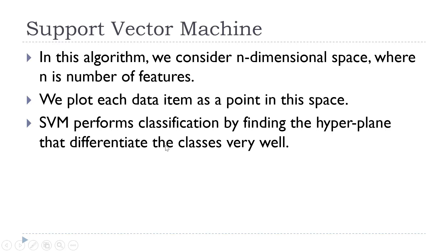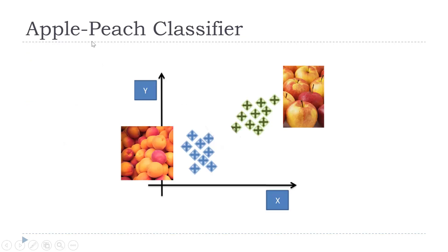Now let us consider a classifier which is used to classify apple and peach, two fruits. So here we have two classes, and in order to classify these two classes, let's suppose we have two attributes X and Y. Since we have only two attributes, X and Y, it will be plotted in a two-dimensional graph.